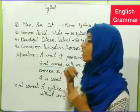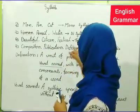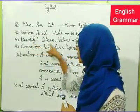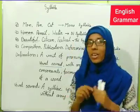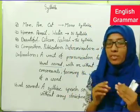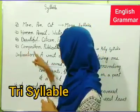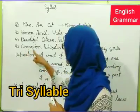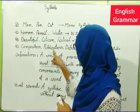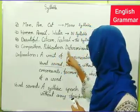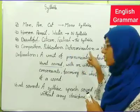Okay? How many times were they pronounced? Three times. So words like BEAUTIFUL, CITIZEN, FESTIVAL are called trisyllable. Then COMPOSITION — that has four syllables.